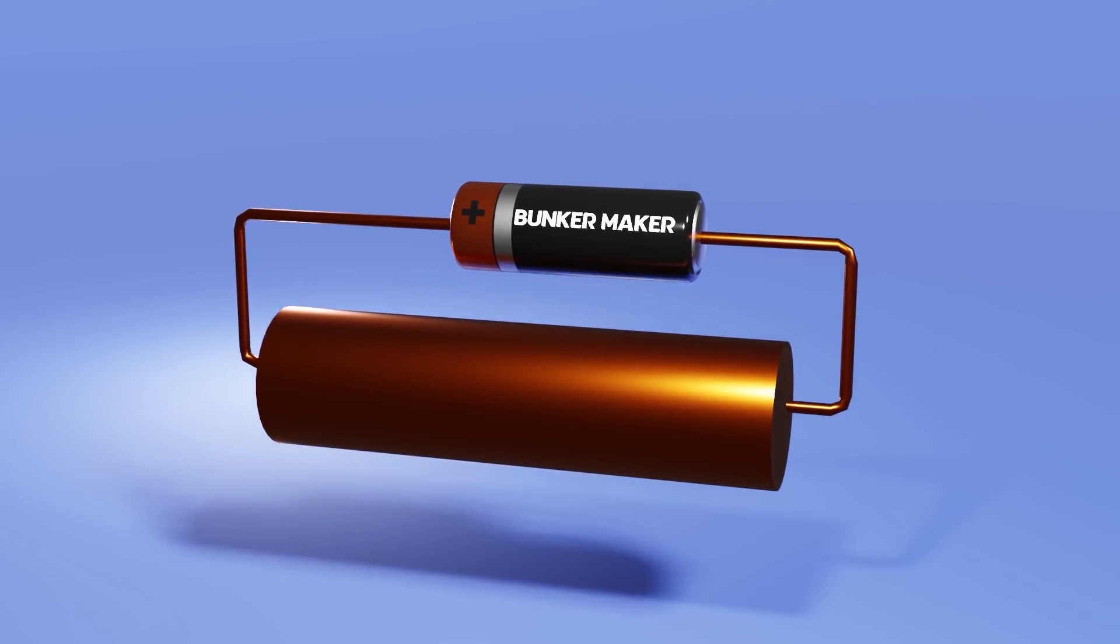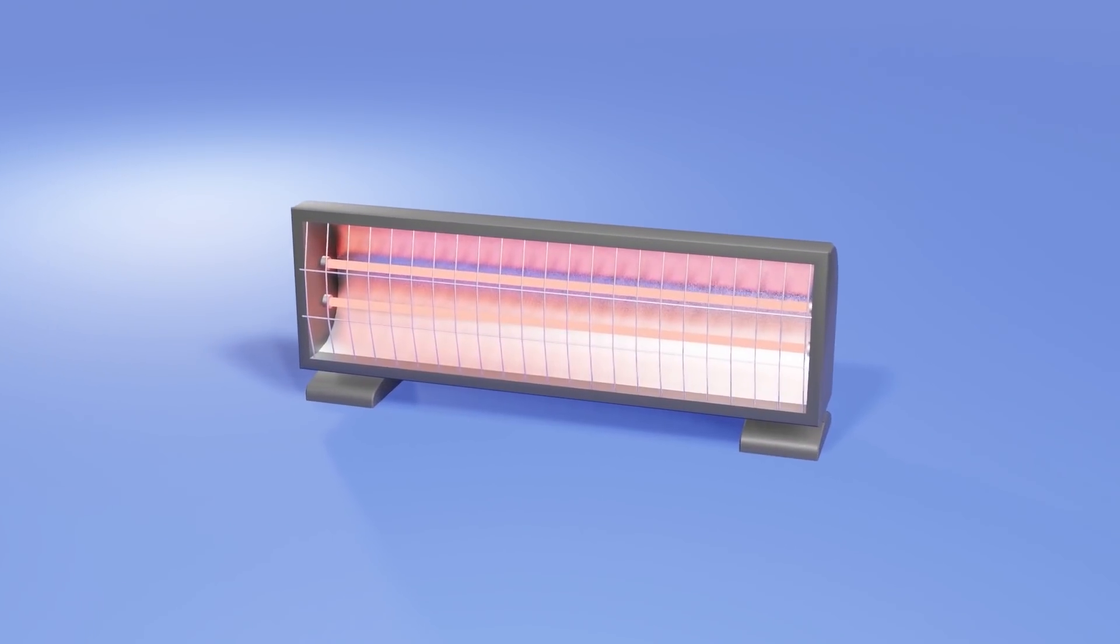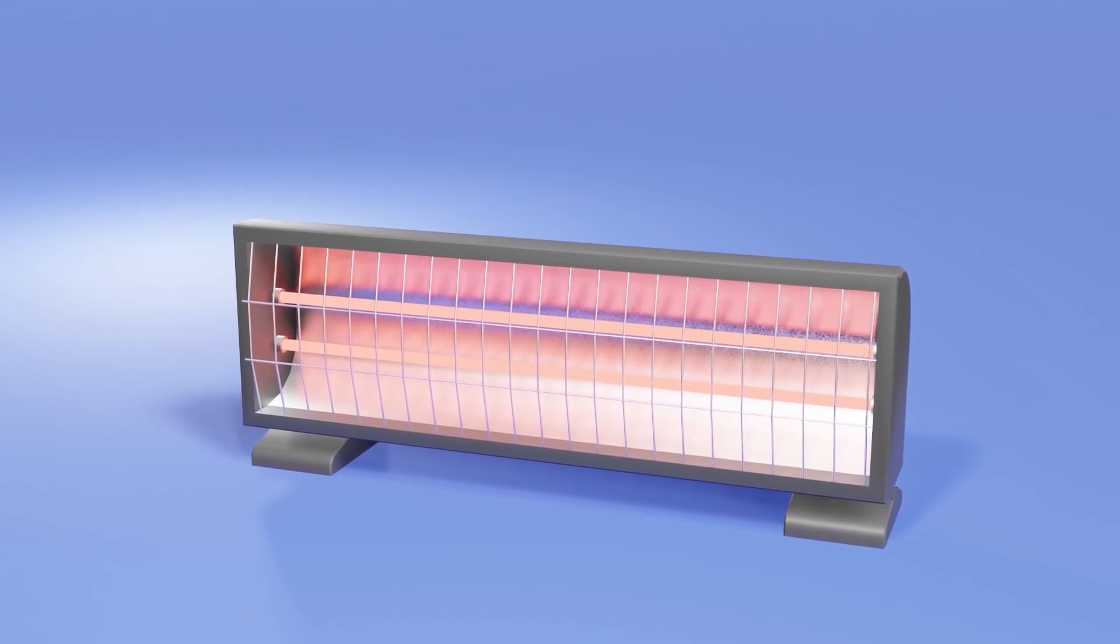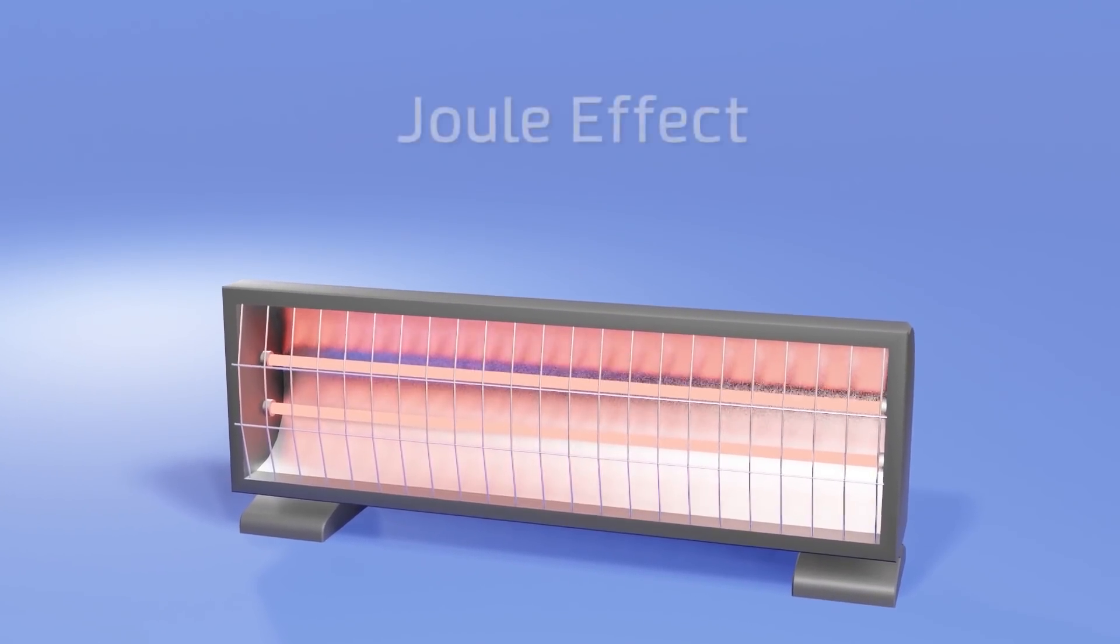And I say almost, because when you want to generate heat, as for example in a heater, basically that is what is done. This phenomenon by which a conductor emits heat when a current passes through it is known as the Joule effect.